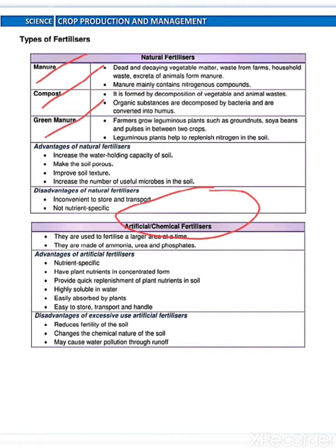Then after chemical fertilizers. Advantages: nutrient specific, have plant nutrients in concentrated form, highly soluble in water, easily absorbed by plants, and easy to store, transport and handle. Disadvantages: reduce fertility of the soil, change the chemical nature of the soil, and may cause water pollution through runoff.